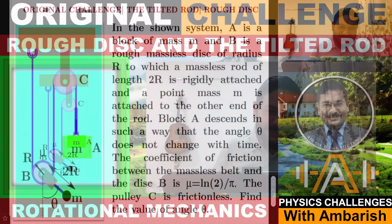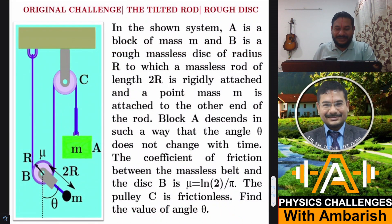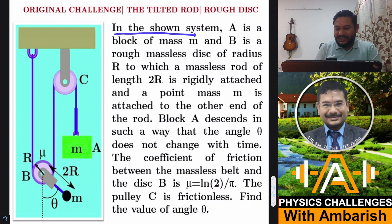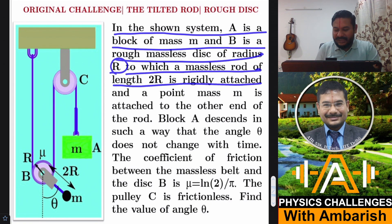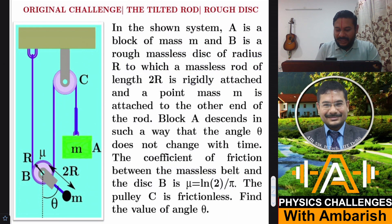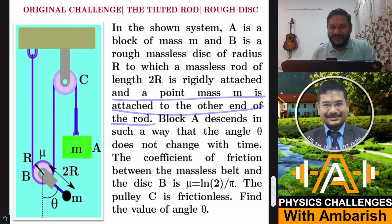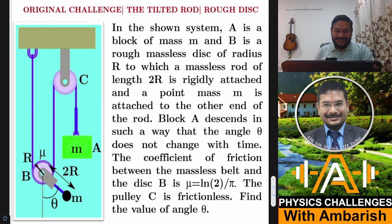So here's the problem. In the shown system, A is a block of mass M and B is a rough massless disk of radius capital R, to which a massless rod of length 2R is rigidly attached. A point mass M is attached to the other end of the rod. So fairly long sentence — let me explain this to you.